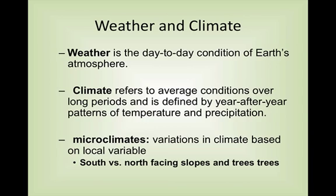Climate is a little bit different than weather, and a lot of times people will get these two mixed up. Weather is at one location at one time — it's a single day. But a climate refers to the average conditions over long periods of time, and it is defined by year-to-year patterns that we see in temperature and precipitation.